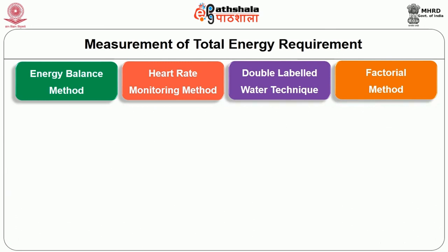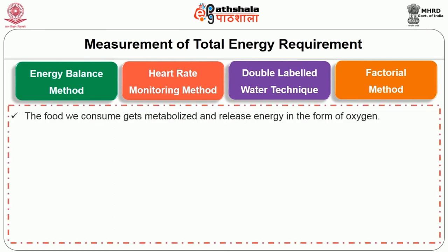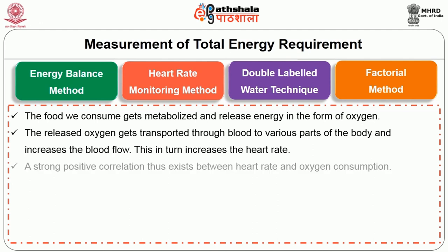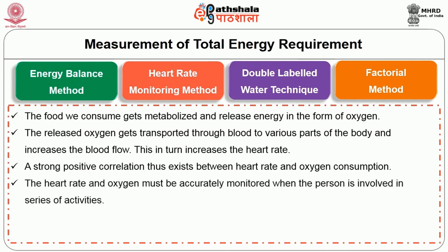Heart rate monitoring method: the food we consume gets metabolized and releases energy in the form of oxygen. The released oxygen gets transported through blood to various parts of the body, increasing blood flow and in turn increasing the heart rate. A strong positive correlation exists between heart rate and oxygen consumption. Heart rate and oxygen must be accurately monitored when the person is involved in a series of activities.